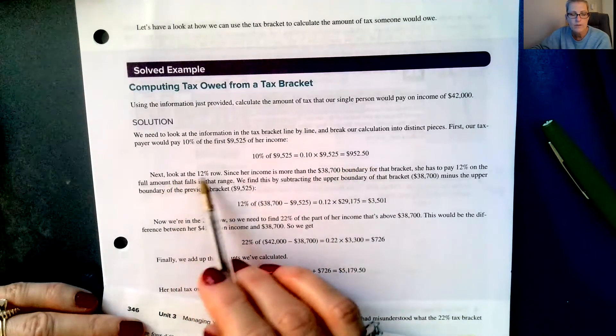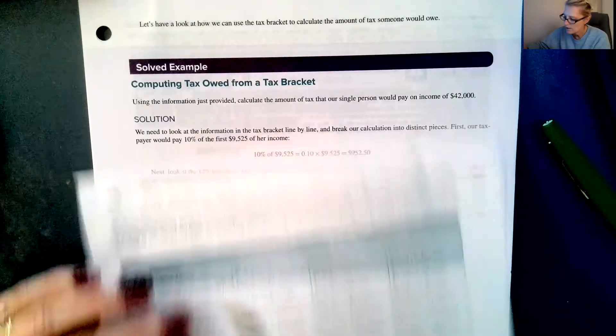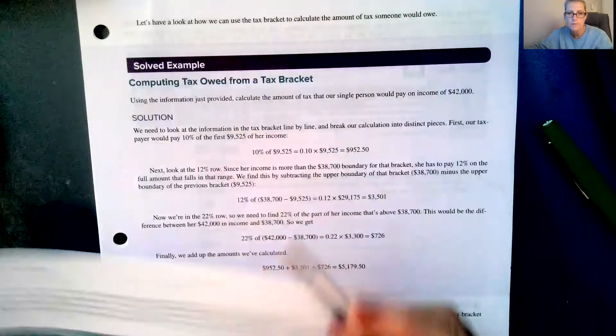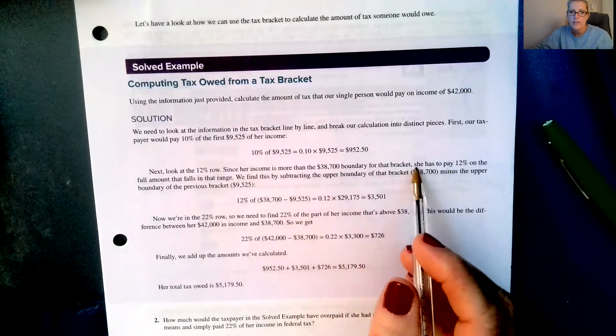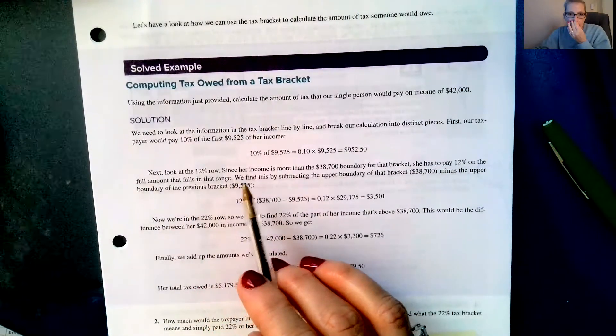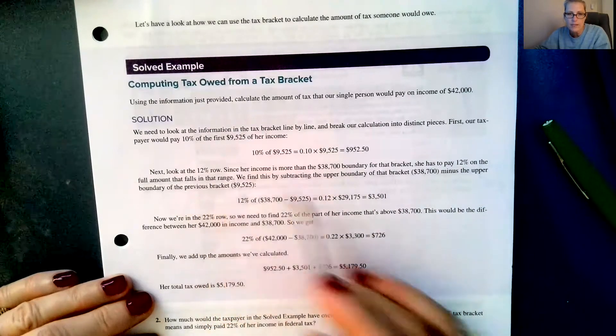So 10% of $9,525 is $952.50. Next, look at the 12% row. Since her income is more than the $38,700 boundary, so the boundary is the number on the right, that's the top boundary, she has to pay 12% on the full amount that falls in that range.